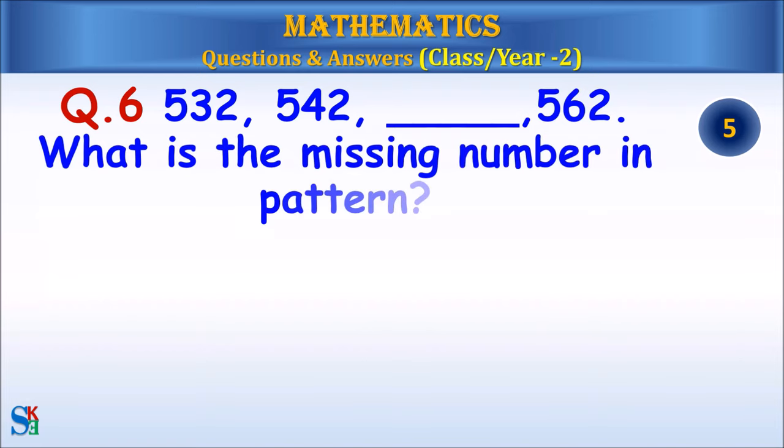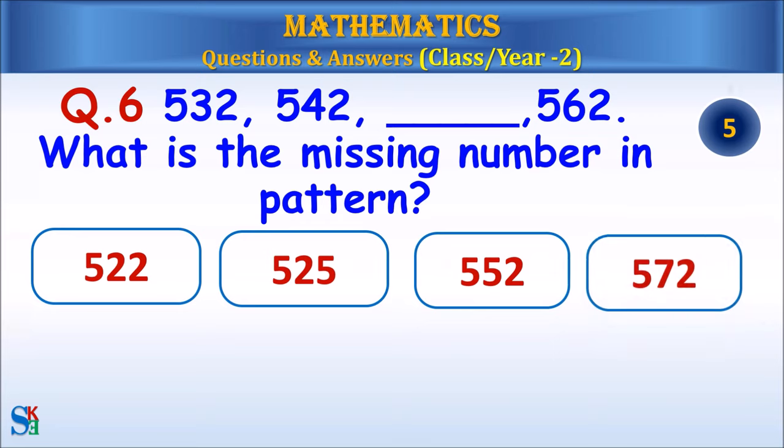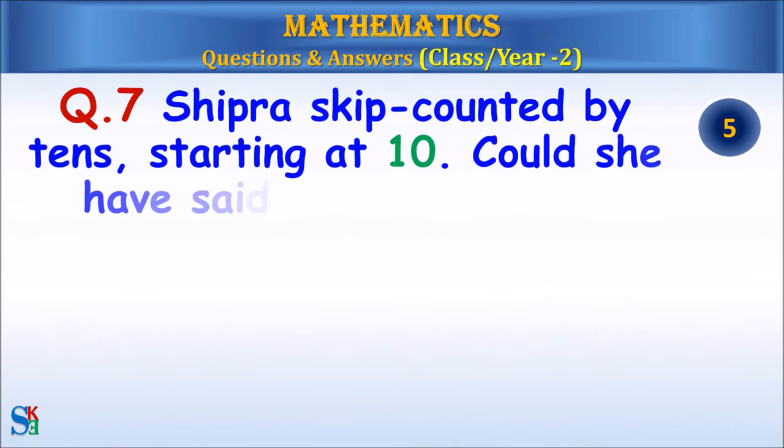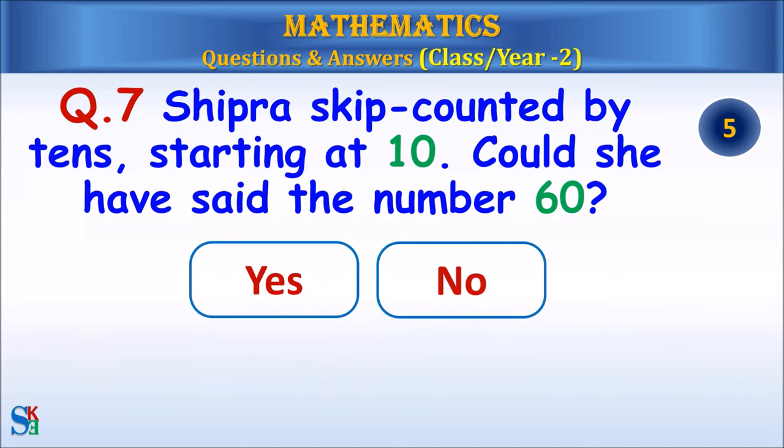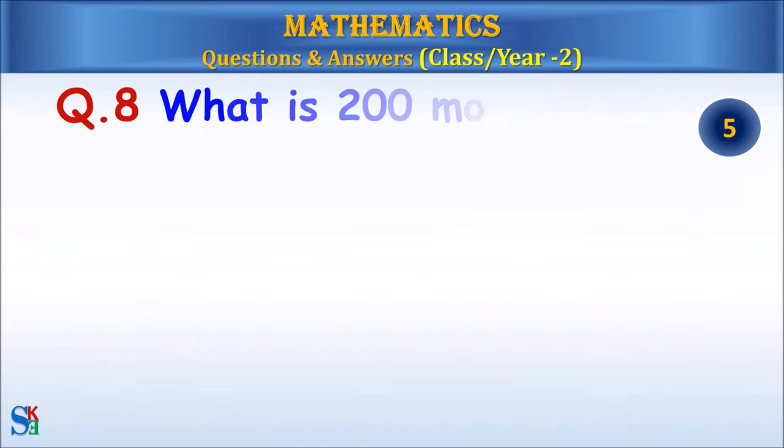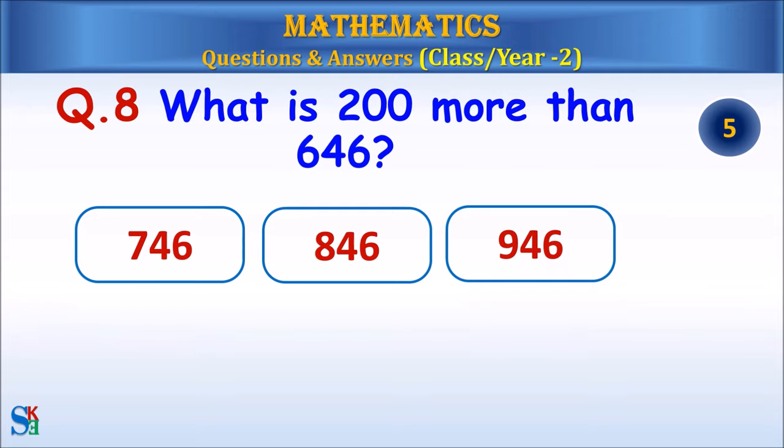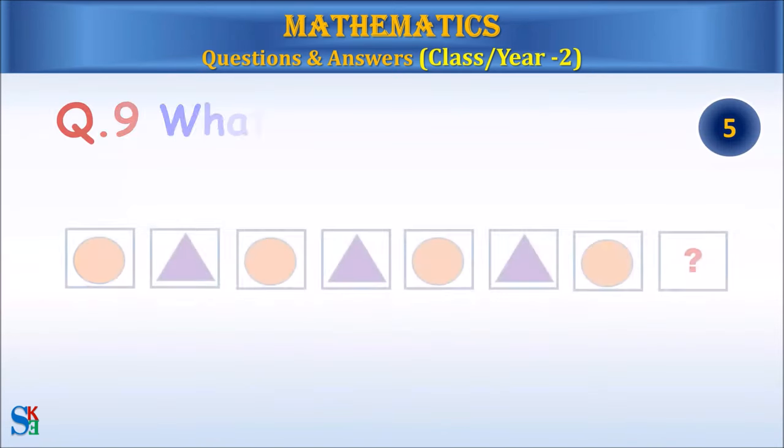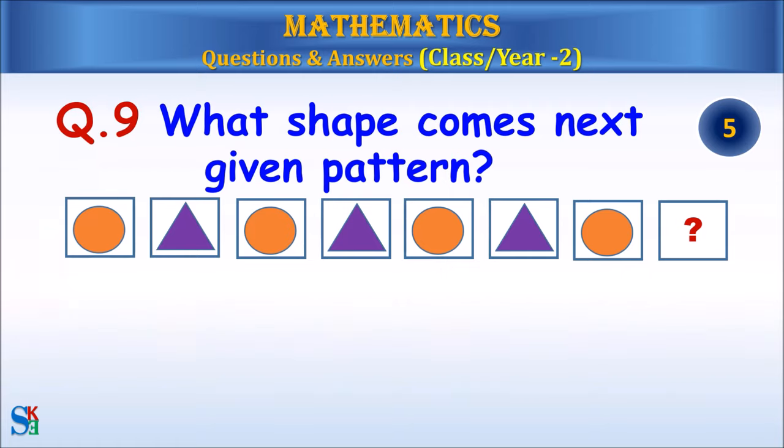Question 6: What is the missing number in pattern? Answer: 552. Question 7: Shipra skip-counted by tens, starting at 10. Could she have said the number 60? Answer: Yes. Question 8: What is 200 more than 646? Answer: 846.